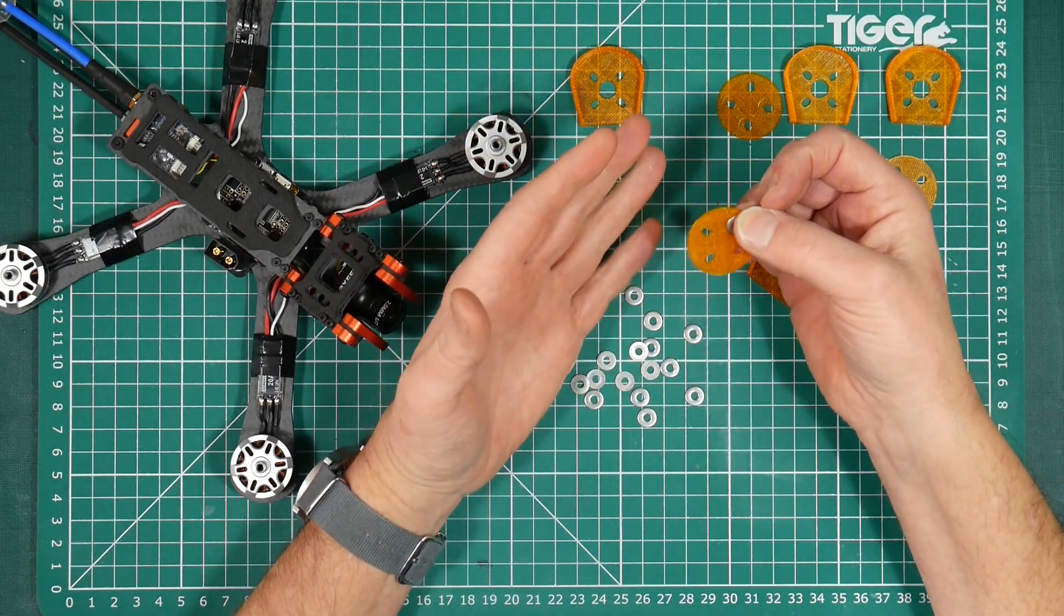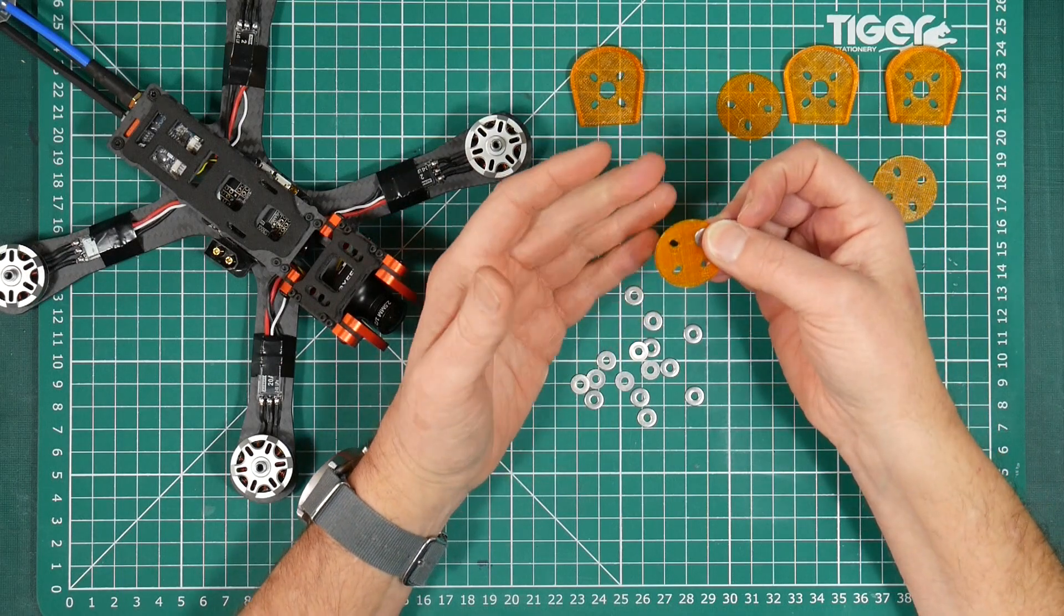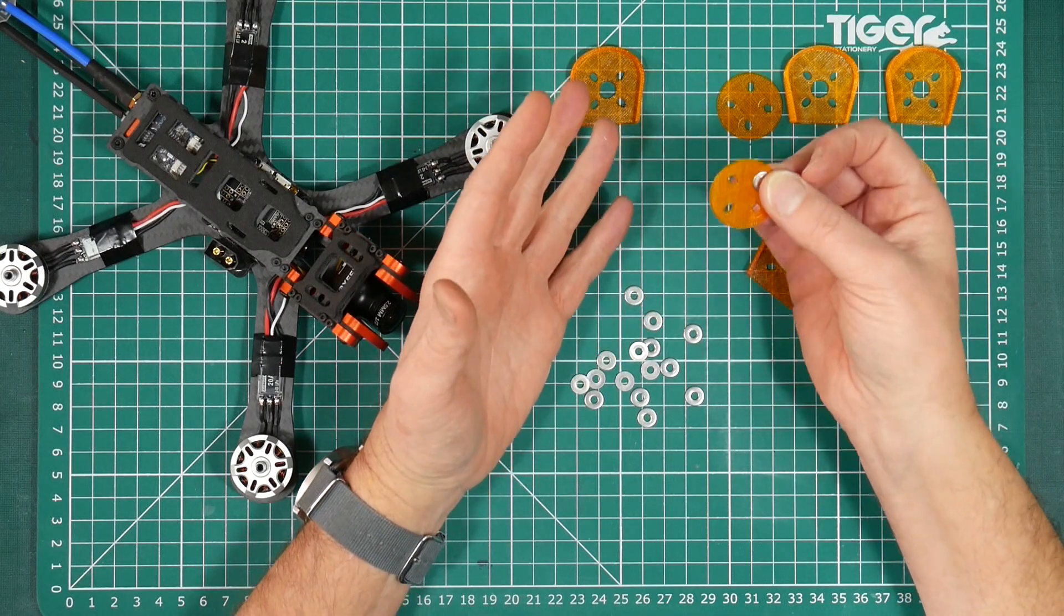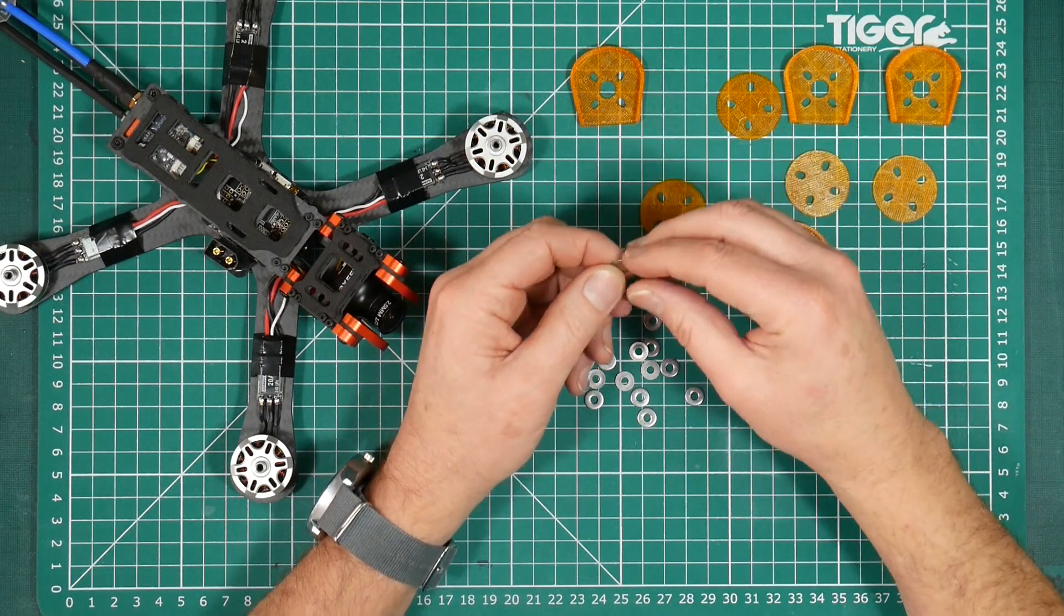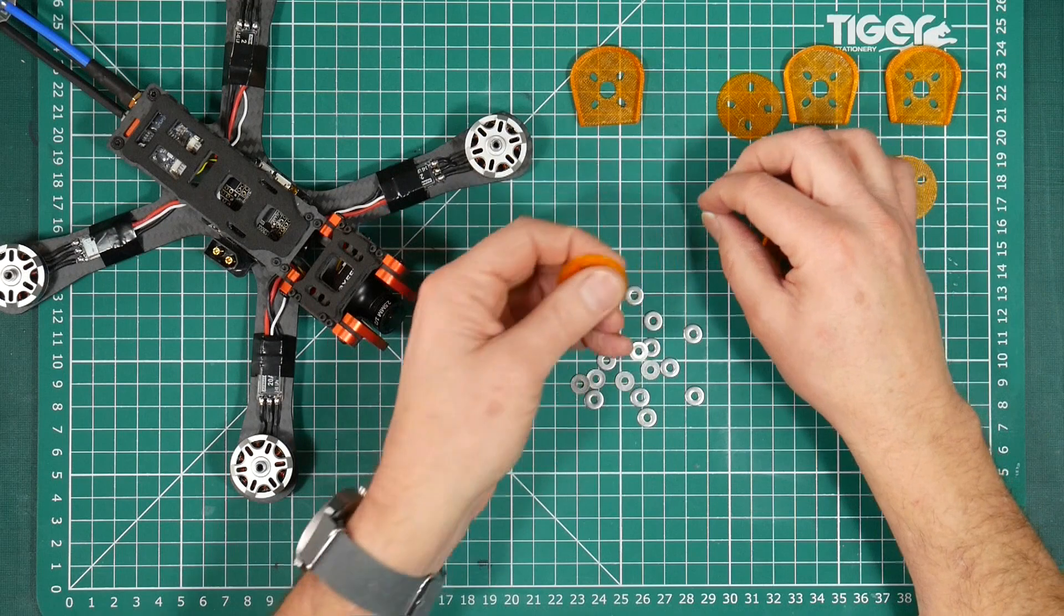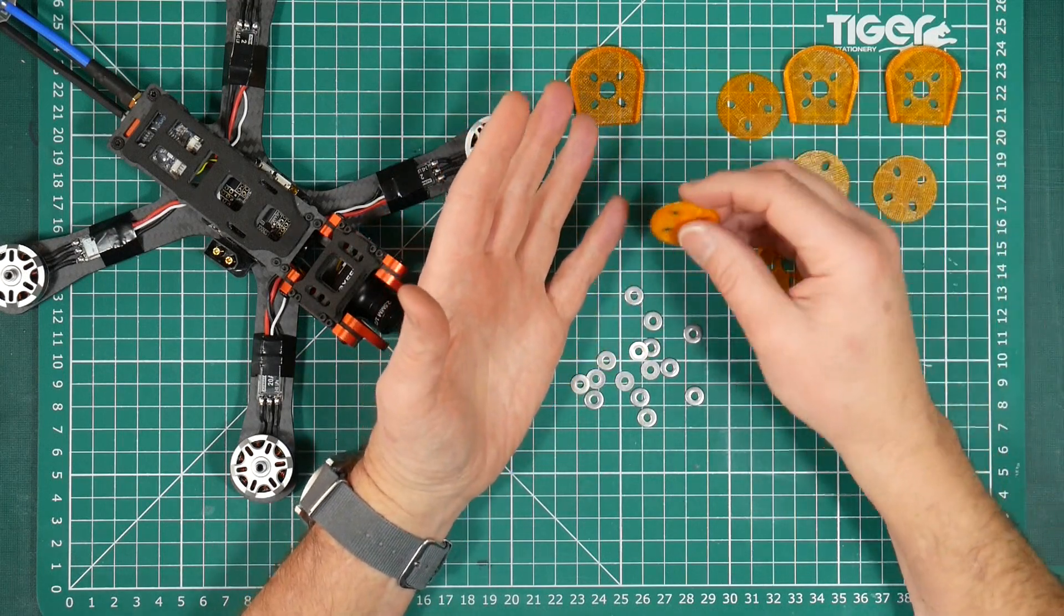Although these don't use a 3D printed bush to completely isolate the bolts from the holes in the frame like the Diatone ones, they do isolate much better than the simple single 3D printed versions, and fitting these is remarkably straightforward.